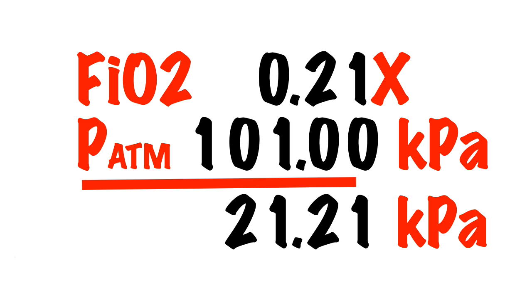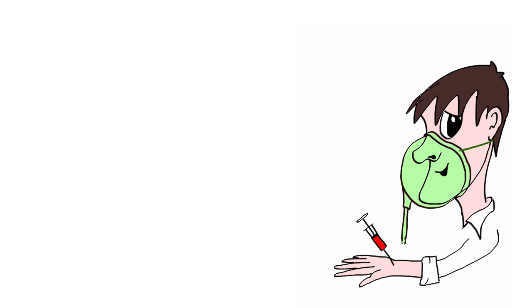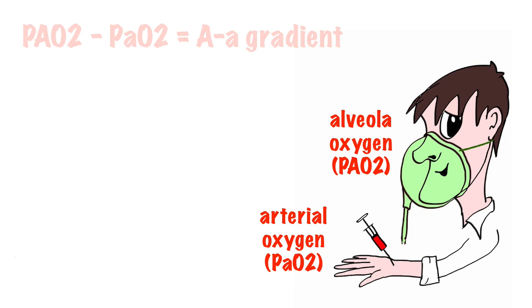Due to a quirk of fate at sea level, the percentage of oxygen is roughly equal to the partial pressure of oxygen, i.e., 21% equals 21 kilopascals. We call the gap between what the patient breathes in and the arterial partial pressure of oxygen the A-a or alveolar-arterial gradient.